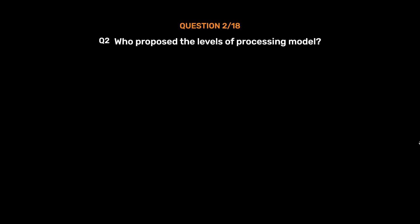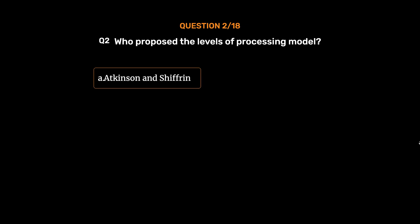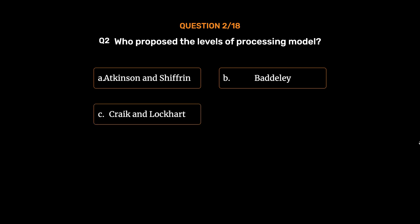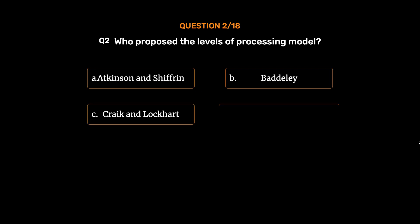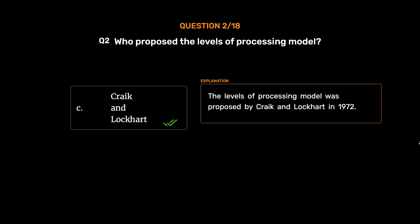Question number 2. Who proposed the levels of processing model? Option A: Atkinson and Schiffrin. Option B: Baddeley. Option C: Craik and Lockhart. Option D: Alan Collins and Ross Quillian. The correct answer is Option C, Craik and Lockhart. The levels of processing model was proposed by Craik and Lockhart in 1972.